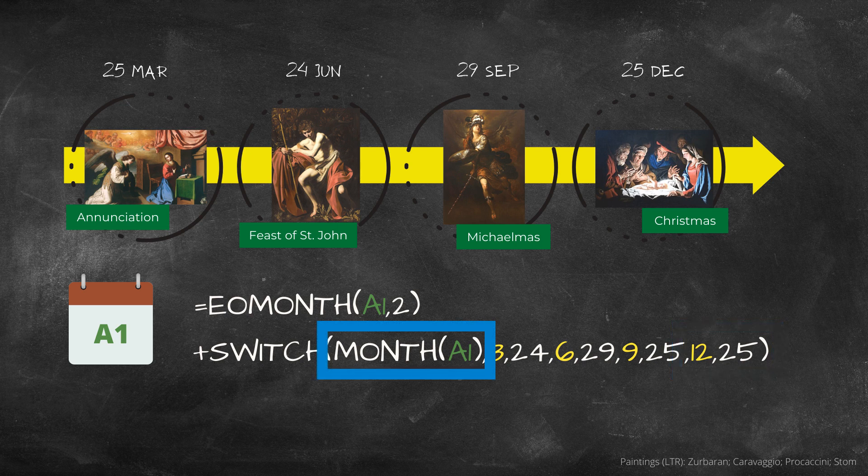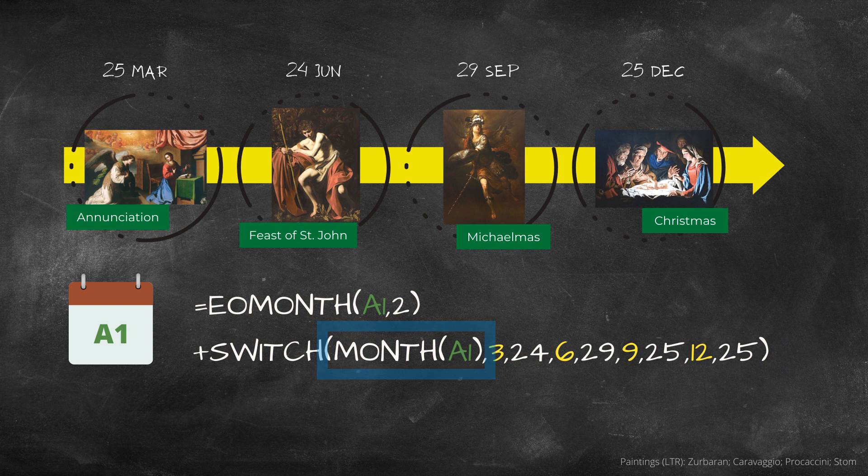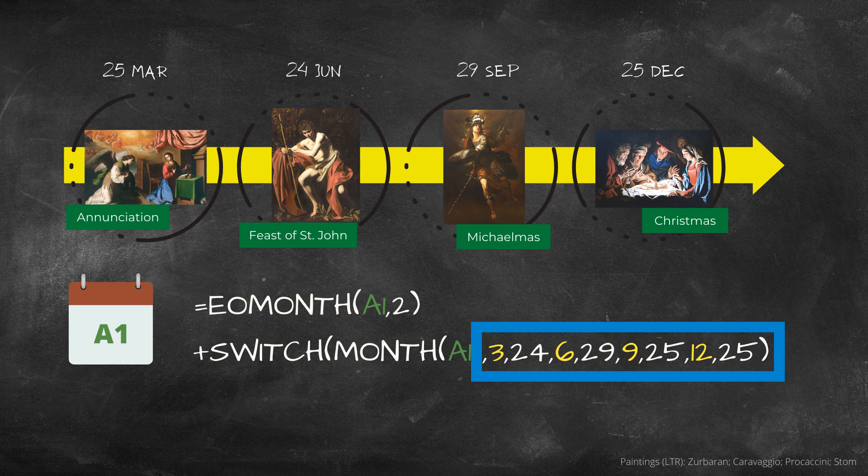The SWITCH function finds the value it needs in the subsequent pairs and returns the corresponding number of days from that pair. And this is how the EOMONTH plus SWITCH method gives you the next quarter day.